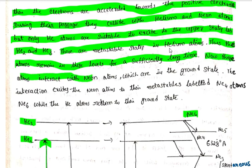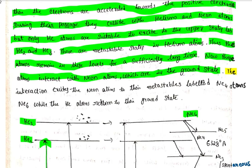These excited helium atoms, in their metastable state, interact with neon atoms which are in the ground state. This interaction excites the neon atoms to their metastable states labeled as neon-4 and neon-6, while the helium atoms return to their ground state through de-excitation.